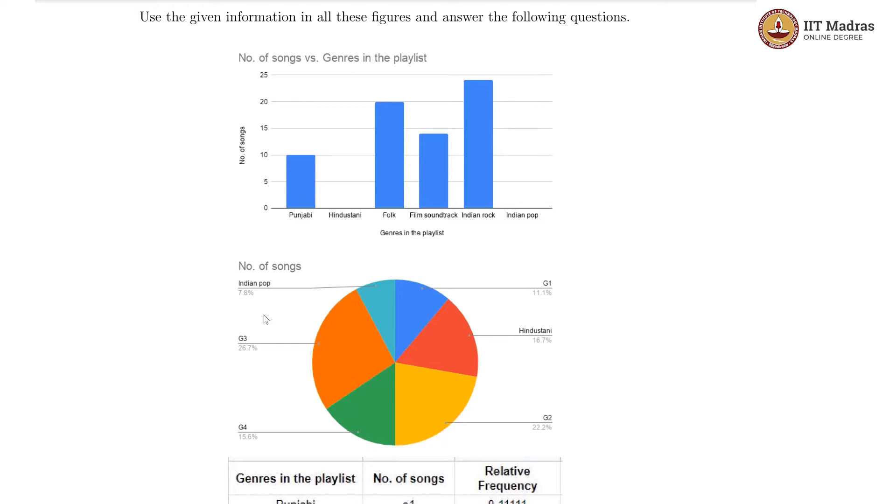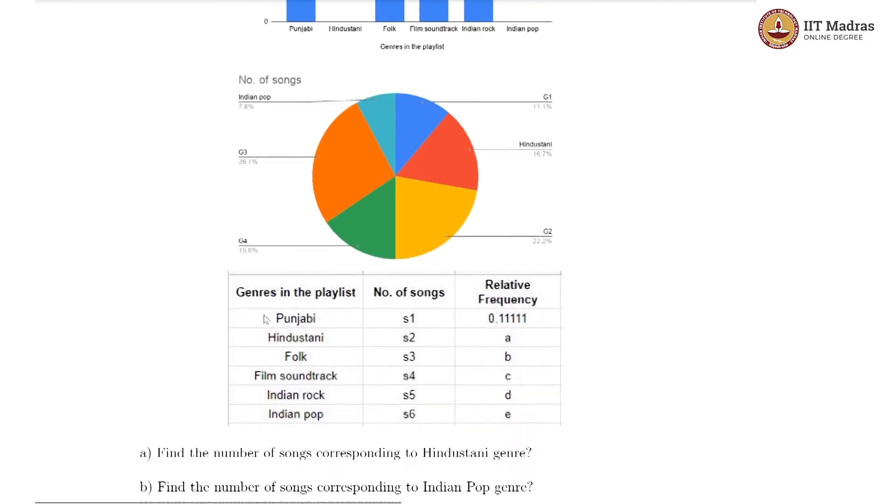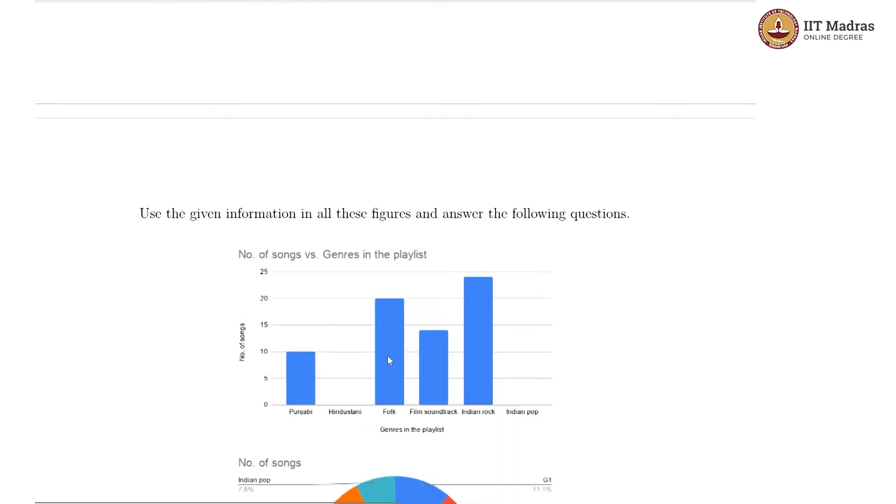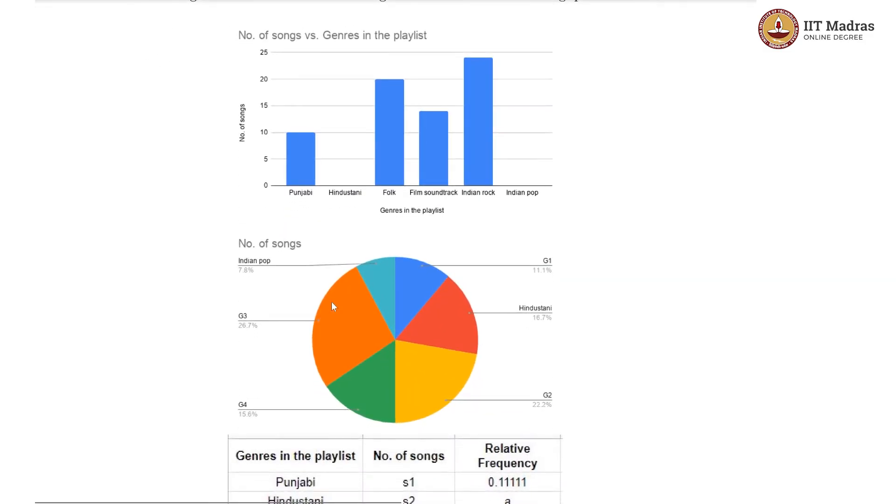Here, they are saying given the information in all these figures, so there are three figures: a bar chart, a pie chart, and a frequency table. Using this information answer the following question. This is essentially to do with songs and genres in a playlist.